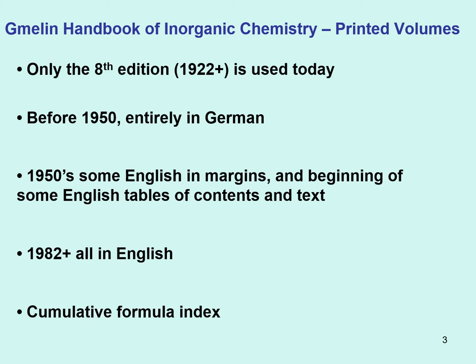Before 1950, the handbook was entirely in German, which is why until about 30 years ago every chemistry student had to learn German. Starting in the 1950s, some English appeared in the margins and tables of contents. After 1992, all new books are only in English. Unfortunately, very few CUNY libraries have these newer English volumes, due to budget cuts under several governors that have reduced CUNY's funding.